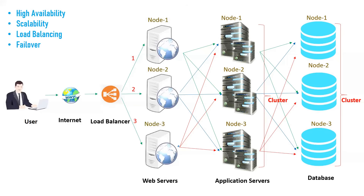This is the concept of high availability, scalability, load balancing, and failover. High availability means having multiple instances of web servers, application servers, and databases — if any instance crashes, other servers can serve the request. Scalability means all nodes are in a cluster and you can add more nodes as load increases — scaling web servers from three to four, application servers from three to ten or twenty, and database nodes similarly — based on future demand.